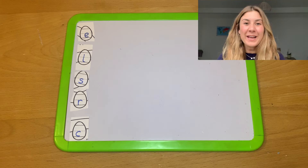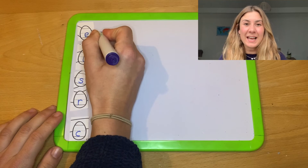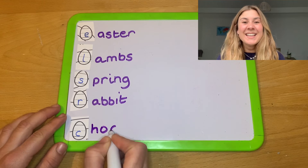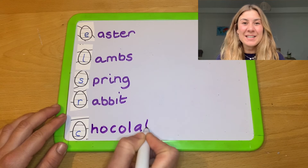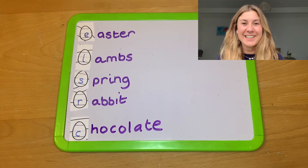One other way that you might want to use this resource is by giving your children a selection of letters. Can they then think of Easter-related words that begin with that letter? And of course you could make this resource reusable using a laminator or a plastic wallet.